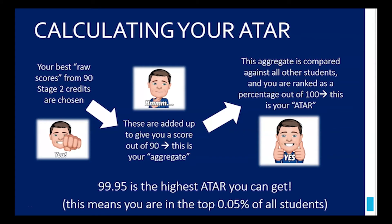99.95 is the highest ATAR you can get. This means you're in the top 0.05% of all students. You've got to remember it's a percentage ranking. So 80 means you are in the top 20% of all students. Your aggregate was in the top 20% of all students who sat the SACE that year.